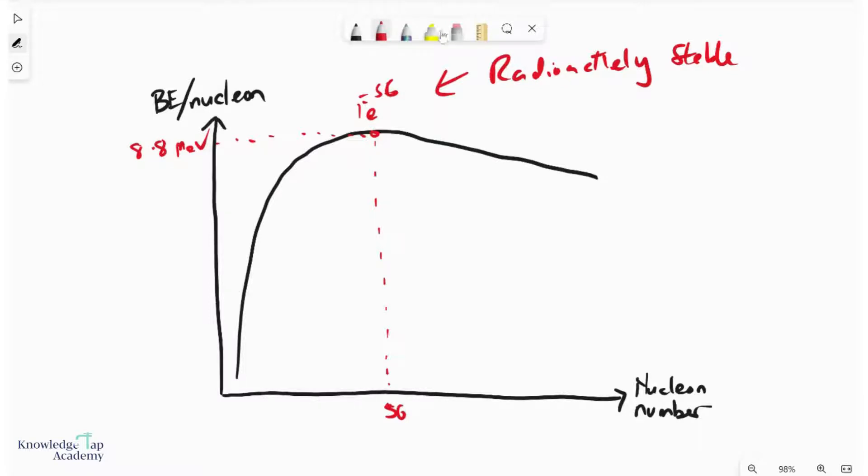If we are on the left side of this graph, these guys over here will tend to want to undergo fusion because they just want to become like iron. If you're on the left side, you're too small, so what do you do? You try to combine with other smaller nuclei and hopefully you get closer to this magical iron-56.